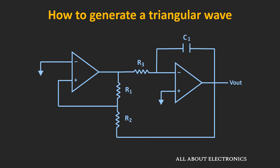Let's understand the working of this triangular wave generator. This Schmitt Trigger is nothing but the comparator with hysteresis — meaning that whenever the voltage at the non-inverting node goes above or below 0V, the output of this comparator will change between the positive saturation voltage and the negative saturation voltage. These two voltages act as an input for the integrator circuit, which integrates this voltage for a finite time. The integrated voltage is then fed back to the Schmitt Trigger circuit.